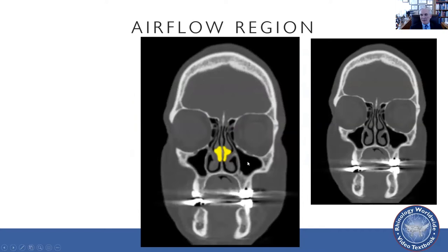To show this pictorially, on this coronal cut I've drawn where the area of maximum nasal airflow is. This is where the air wants to go at maximum velocity — not down along the nasal floor and not up high in the nose. It's right in this area, inferior to the middle turbinate, and medial and superior to the inferior turbinate. This is your area of maximum airflow, which is the area you need to address when it comes to septoplasty surgery.